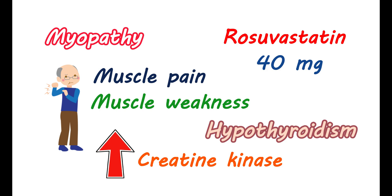Hypothyroidism should be properly treated, as untreated hypothyroidism increases the risk of myopathy. In renal impairment, rosuvastatin is not properly eliminated from the body, leading to its accumulation and increasing the risk of myopathy. Therefore, in people with significant renal dysfunction, the dose of this medication should be reduced. If elevated levels of creatine kinase are observed or myopathy is suspected, the drug should be discontinued.